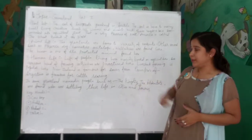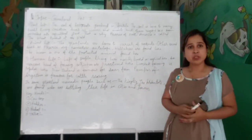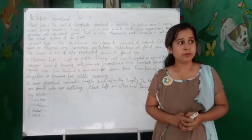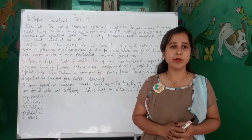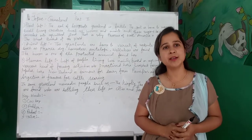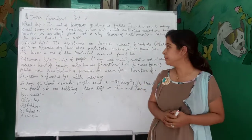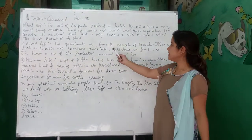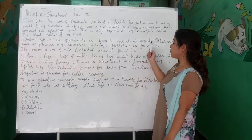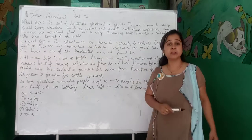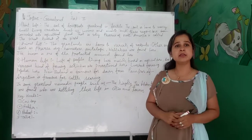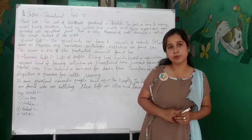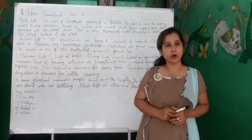The second topic is animal life — what kind of animals do we find there? We find different kinds of animals there. The grasslands are home to a variety of rodents. Grassland is the best place for rodents.